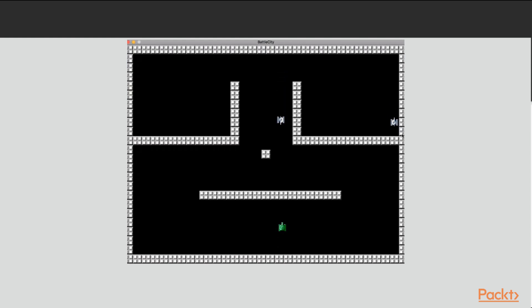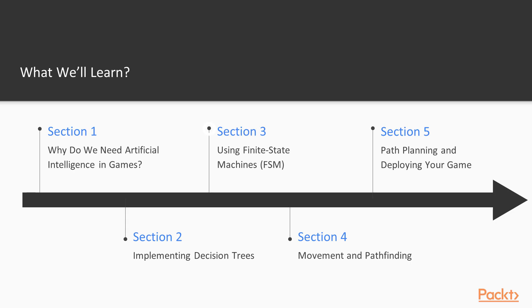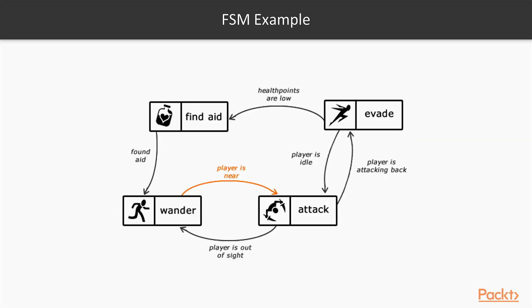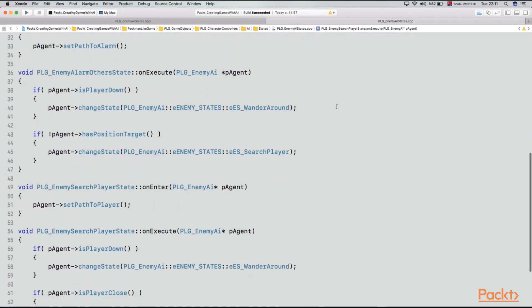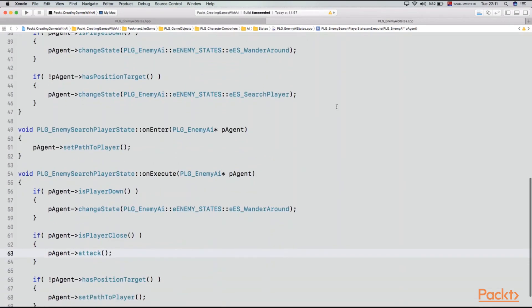Finally, we will finish this section by developing a battle-style-like game. We will begin to talk about the key topics and develop a Pac-Man-like game starting from the third section. First, we will talk about finite state machines, their advantages and disadvantages, and how to use them for our agent's logic and behavior. We will also develop our generic state machine and use it in our game.